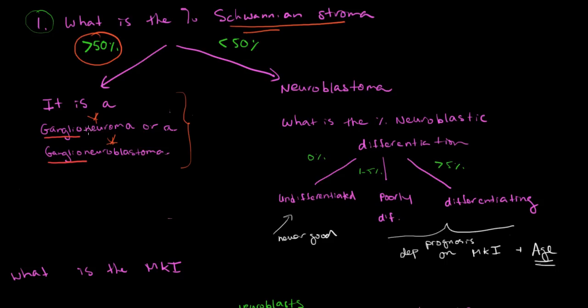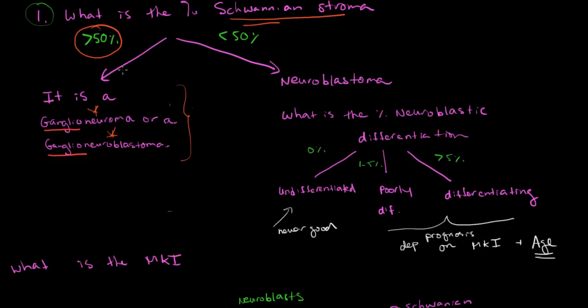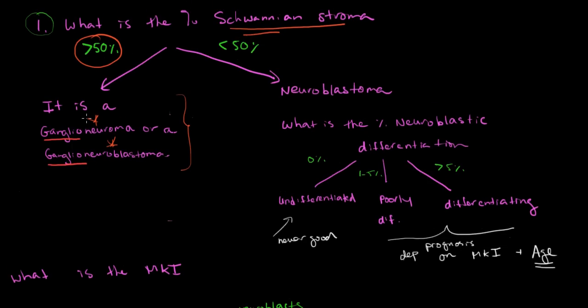So if there's greater than 50% Schwannian stroma, then you've got a ganglioneuroma or a ganglioneuroblastoma, but not a true neuroblastoma. If there's less than 50% Schwannian stroma, then you do have a neuroblastoma. And once you've established that you have a neuroblastoma, the next question you ask is, what's the percent neuroblastic differentiation?